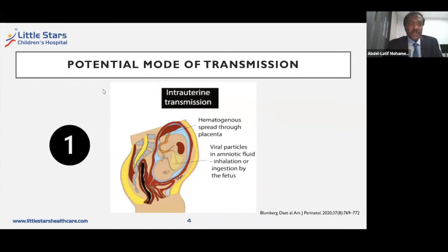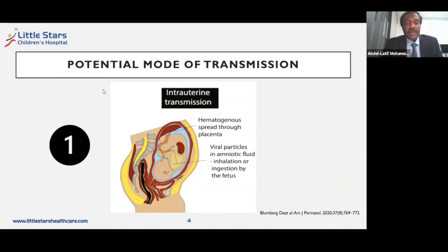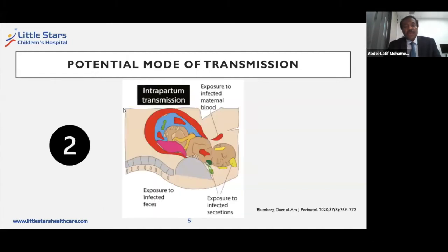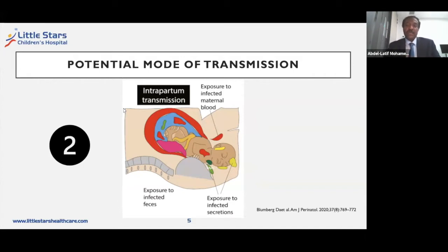Intrauterine transmission is not very common with COVID — similar to other neonatal infections. It can be hematogenous spread through the placenta, or can be through the amniotic fluid if there are any viral particles in the amniotic fluid, and through inhalation of that amniotic fluid that can infect the fetus. The second mode of transmission is intrapartum transmission — similar to other infections — which is exposure of the infant during or after the delivery process to the secretions of the mother, through blood or other secretions.